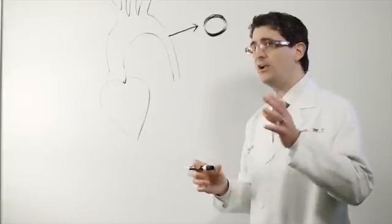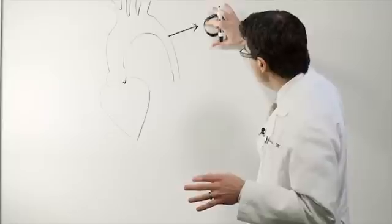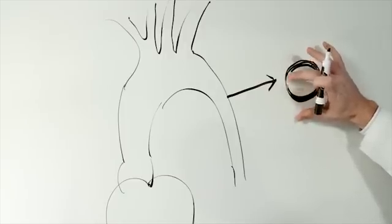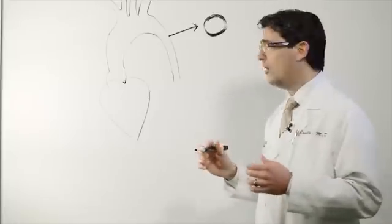When someone has an aortic dissection, what's happened is they've had a tear on the inner layer of that aorta.